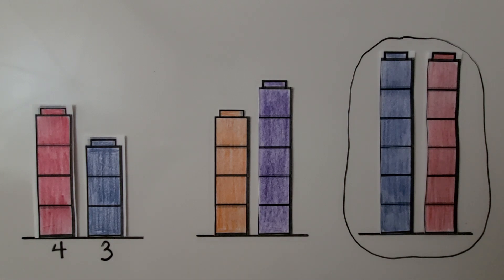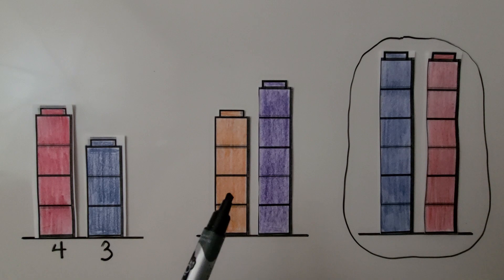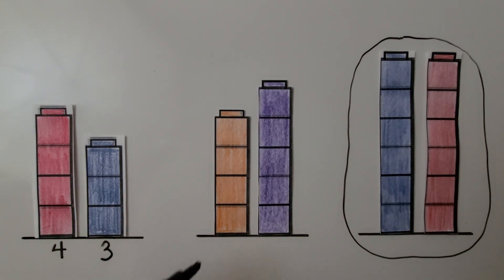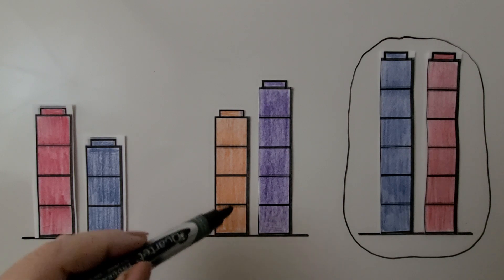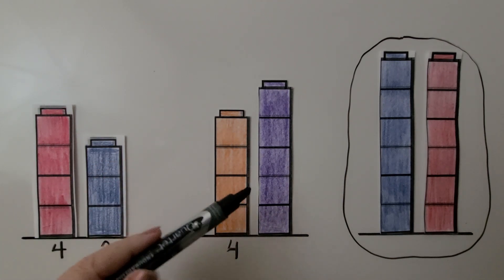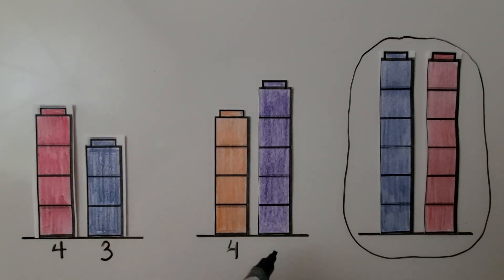When a cube tower is taller than another cube tower, it will have a greater number of cubes and go up farther. The purple cube tower is taller than the orange one — it goes up farther. The orange cube tower has four cubes, and the purple cube tower has five cubes. It has more cubes.